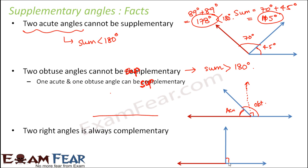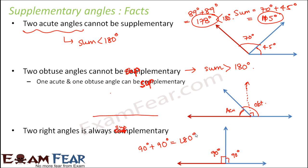If instead you have two right angles, this is also 90 degrees and this is also 90 degrees. Do they make a supplementary pair? Yes, definitely. Two right angles are always supplementary because 90 degrees plus 90 degrees equals 180 degrees.